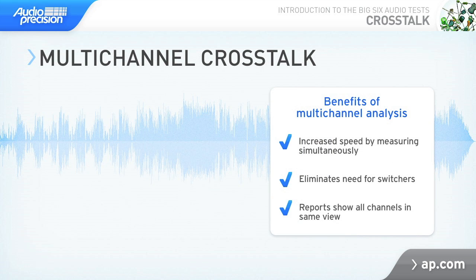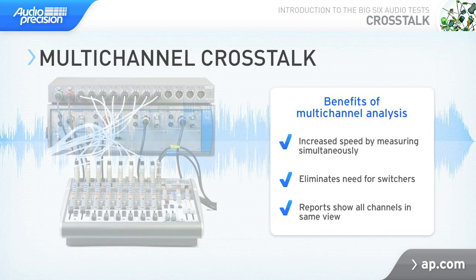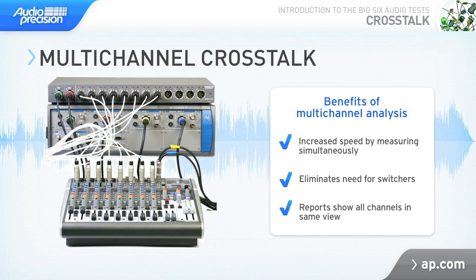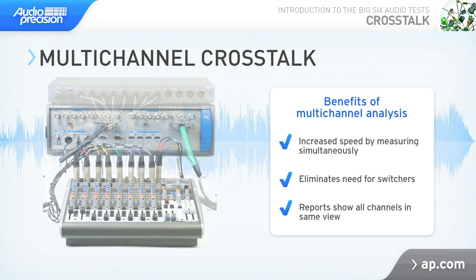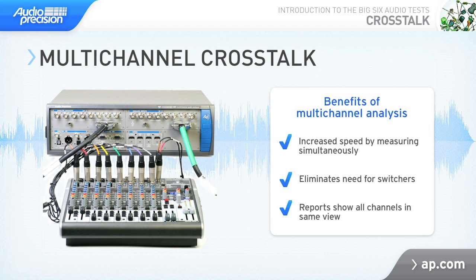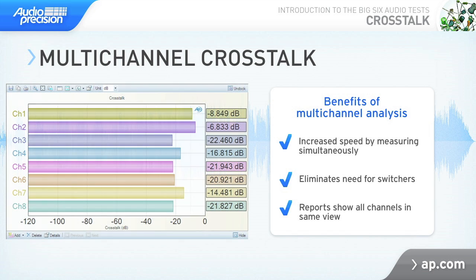Measuring stereo crosstalk is simple with a 2-channel analyzer, but when you have a home theater receiver or a mixer with multiple inputs and outputs, it gets complicated. You could use a switcher and run through each combination of channels off and on, but it's much easier to use a multi-channel audio analyzer that can generate and analyze multiple channels independently and simultaneously. We'll look at these options in a later tutorial that covers multi-channel issues in detail.